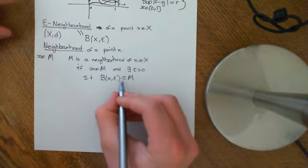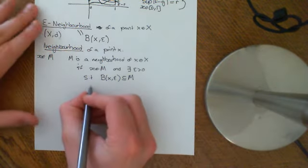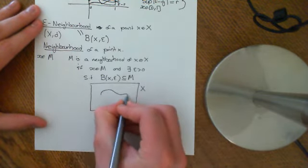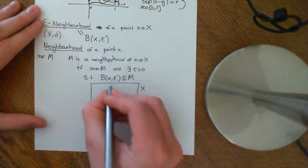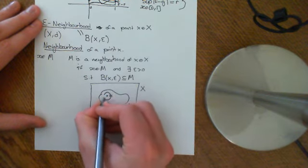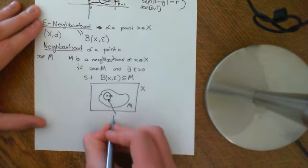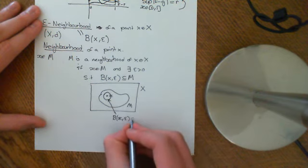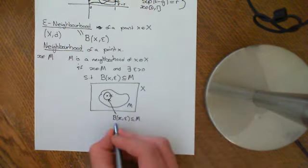It doesn't need to be a proper containment. So if you have a metric space big X with another set M, then M is a neighbourhood of a point little x if little x is within M and I can find an epsilon greater than zero such that the open ball around x of size epsilon is completely contained within M. Note the open ball could in fact equal M.